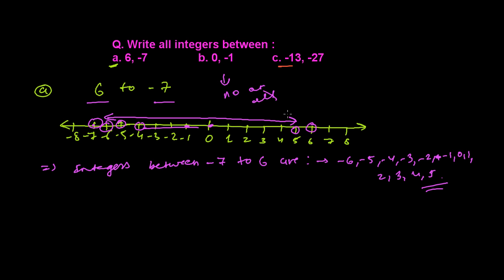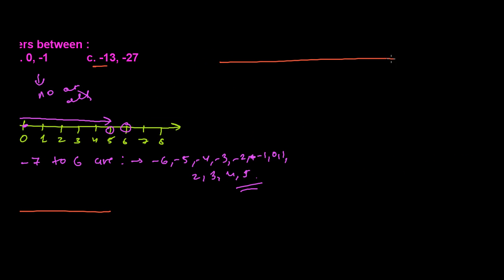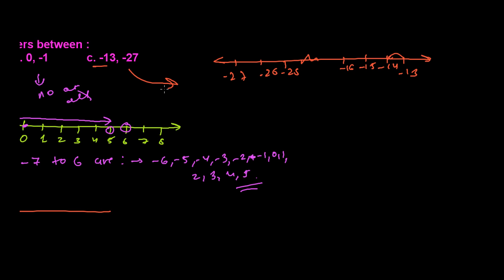Next, between minus 13 and minus 27 on the number line — if this is my number line, this is my minus 13 and this is my minus 27. All the numbers between them: I'll get minus 14, minus 15, minus 16, and so on, minus 25, minus 26.